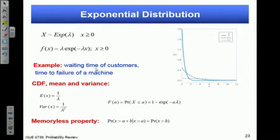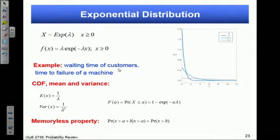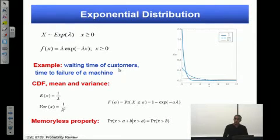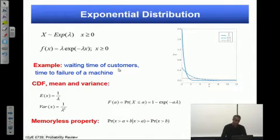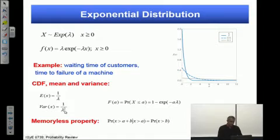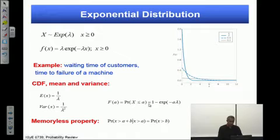That event could be a failure of a machine, or could be the time that a customer should wait until it's served. It has mean and variance, which is one over lambda and one over lambda squared, and this is the CDF function of exponential distribution.